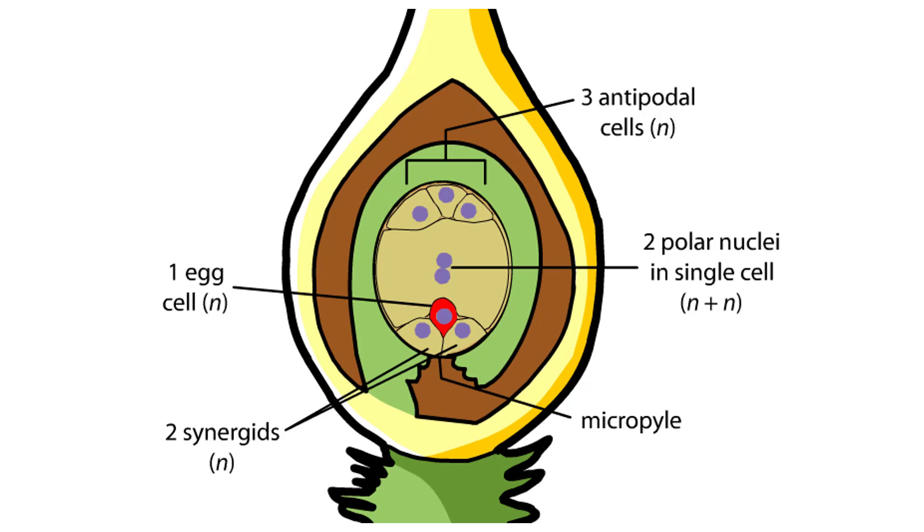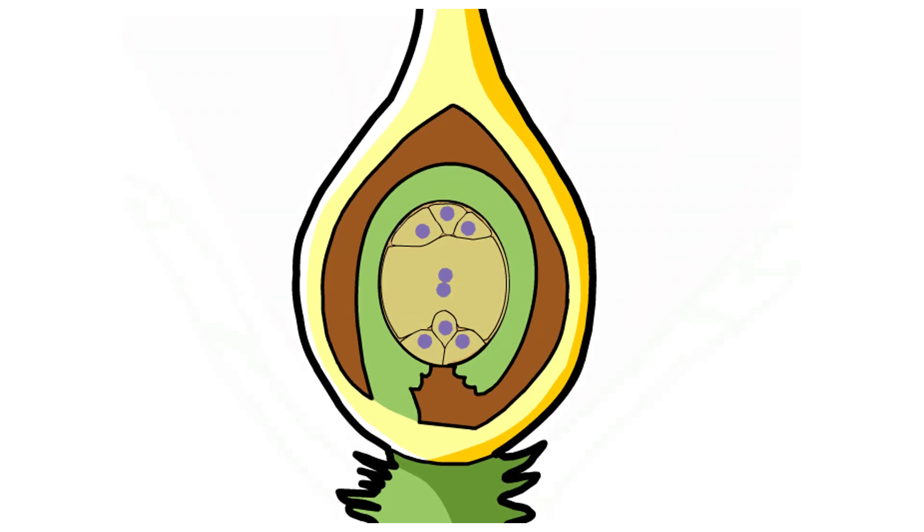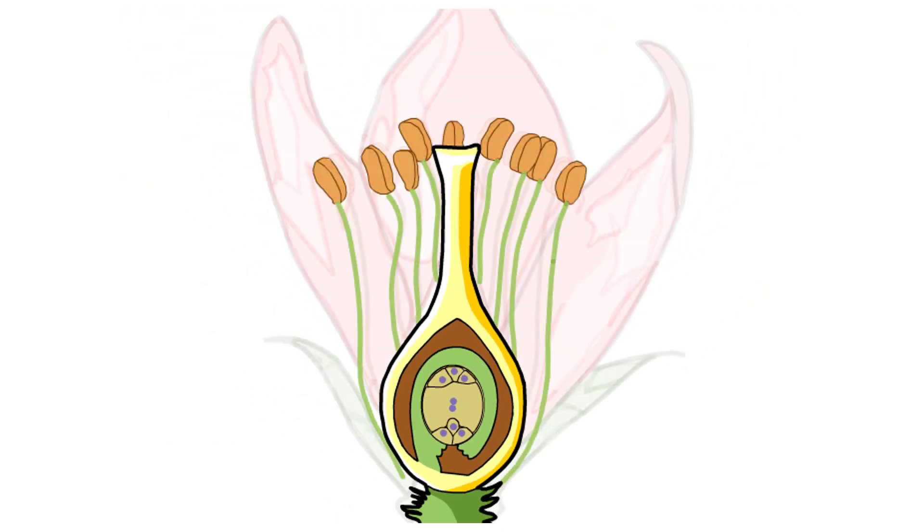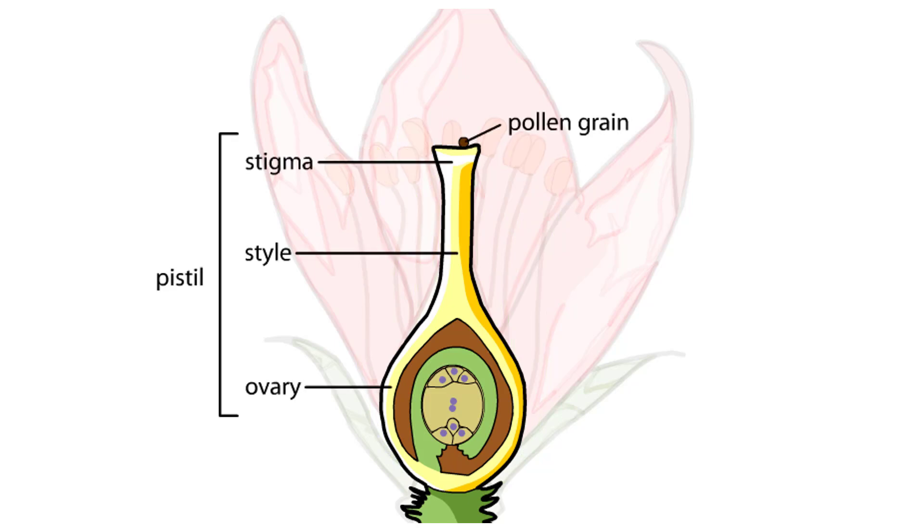The egg cell and the cell with two polar nuclei will eventually take part in double fertilization. Before this can happen, the male gametes, the sperm, must travel to these cells. To reach the embryo sac, a pollen grain that has landed on the stigma begins to germinate, sending a pollen tube through the style and ovary.